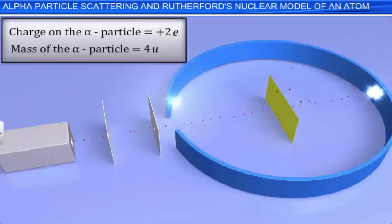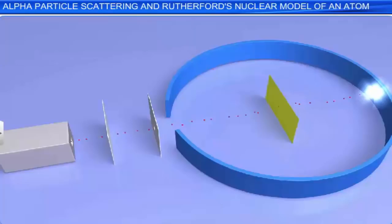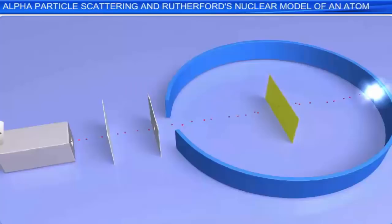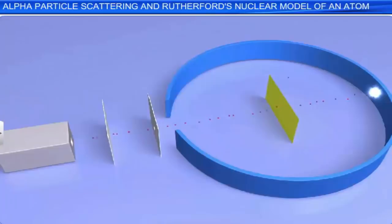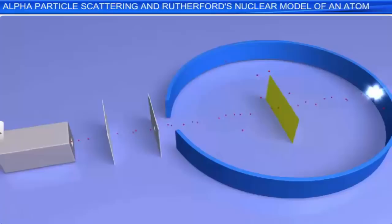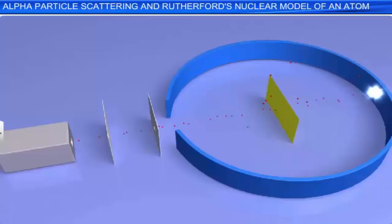The narrow beam of alpha particles was allowed to fall on a thin gold foil of thickness around 2.1 × 10⁻⁷ meter, that is 0.21 micrometer. The scattered alpha particles were made incident on a zinc sulfide screen. Being a fluorescent screen, the alpha particles upon striking the screen caused scintillations, leading to the detection of their presence. The scintillations were observed through a microscope. The entire arrangement was enclosed in a vacuum chamber to avoid stray particles entering the experimental area.